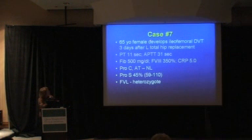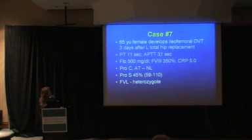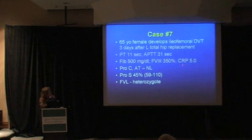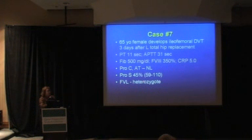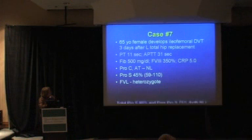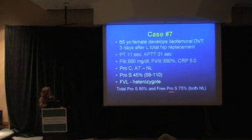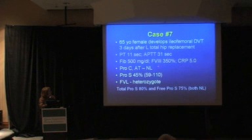Last case: a 65-year-old female developing an iliofemoral DVT three days after a hip replacement. She has a normal PT and PTT. Her fibrinogen was high at 500, her factor VIII was high, and her C-reactive protein is high. Her protein C and antithrombin are normal. The protein S being low in the setting of a high fibrinogen is notable, and she turns out to be a heterozygote for factor V Leiden — two reasons why her clot-based protein S assay may be lower than expected. You'd want to do a total protein S and a free protein S to show that these are actually both normal.